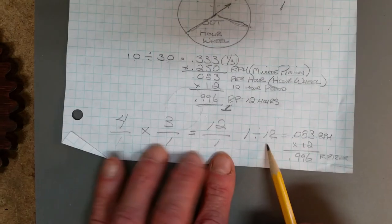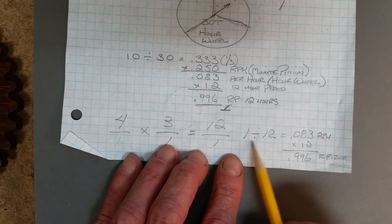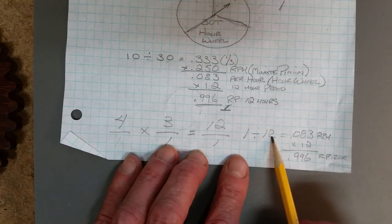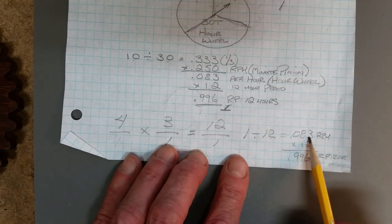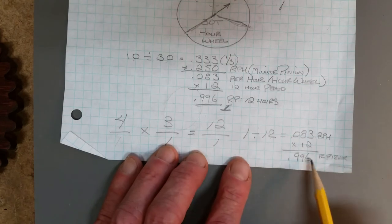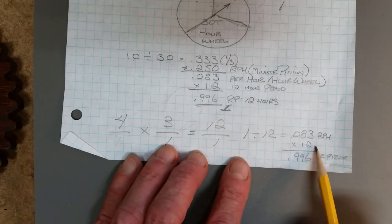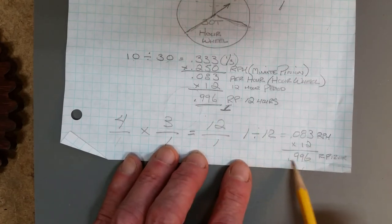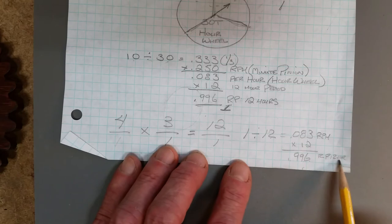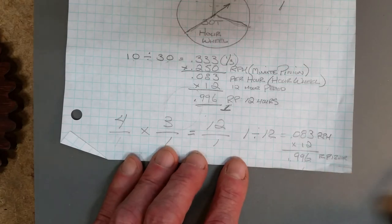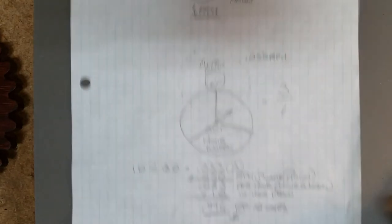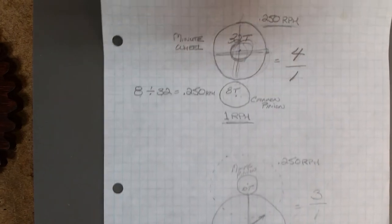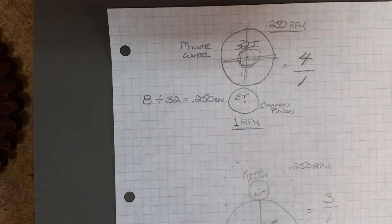We can go further: 1 divided by 12 equals 0.083 again, and then we multiply that by 12 divisions on the dial and we come up with that number. We can prove it again: 0.996 revolutions per twelve hours.